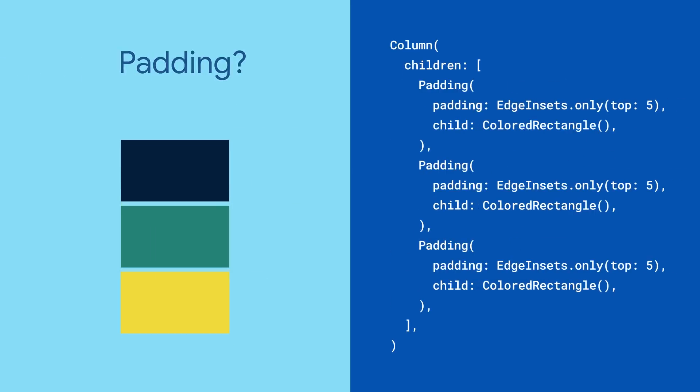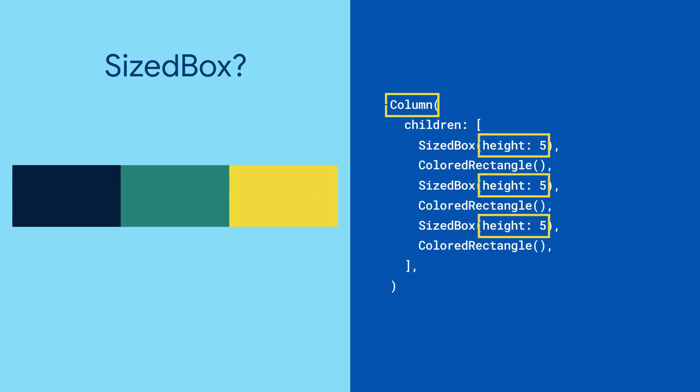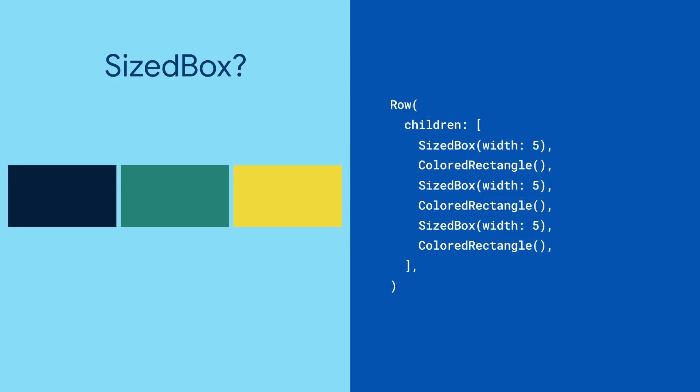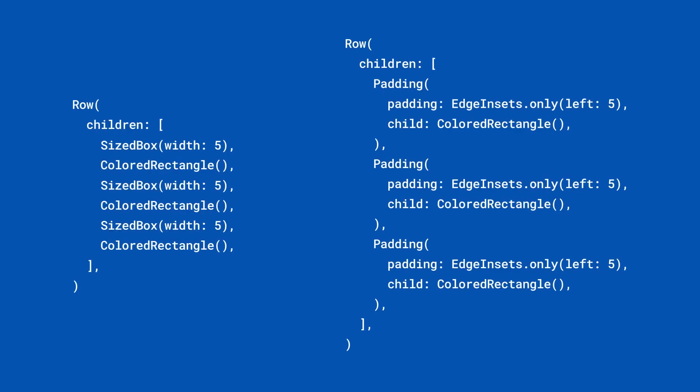You can add padding or size boxes, but you'd have to know if the gap is inside a column or row to specify the direction that the space should expand. Both options can get verbose, potentially making your code harder to read.